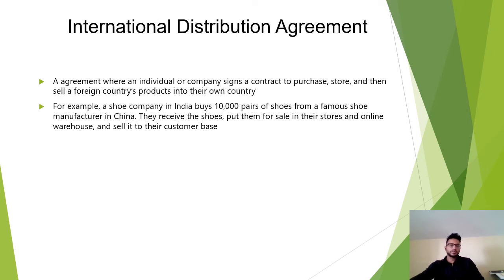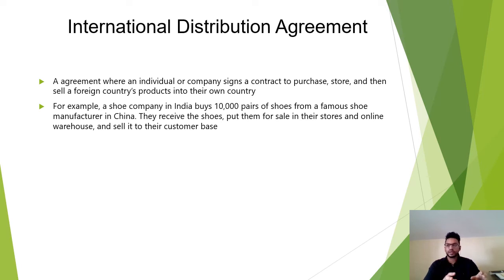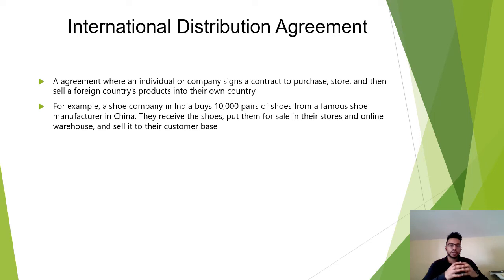An international distribution agreement is an agreement where an individual or company signs a contract to purchase, store, and then sell a foreign country's products in their own country. Distribution means purchasing goods from a manufacturer and selling them from your own stores or warehouse — different from sales, where the product ships directly from the manufacturer to the client. For example, a company in India buys 10,000 pairs of shoes from a Chinese manufacturer, receives them, and sells them through their own stores and online warehouse.